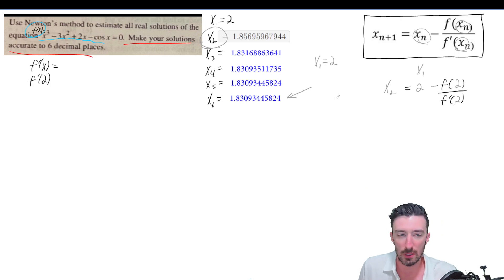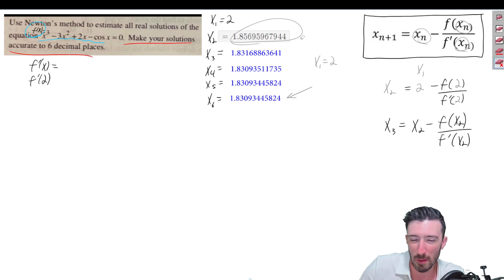So if you're going to set up your third guess, then it would be that you need to take your second guess, subtract f of your second guess, and divide it by f' of your second guess. Okay, so now I'd have to remember that x2 was really 1.8, blah, blah, blah. So that would be really annoying to have to write. I'm not going to do that.